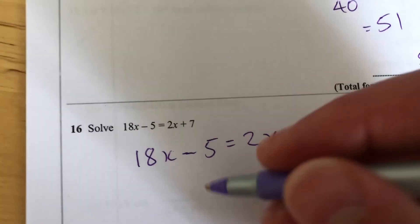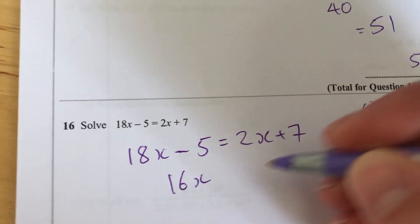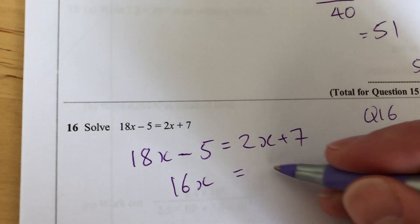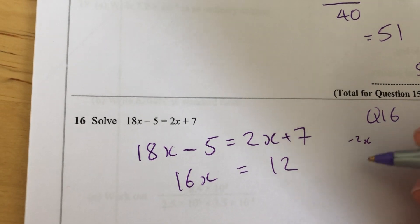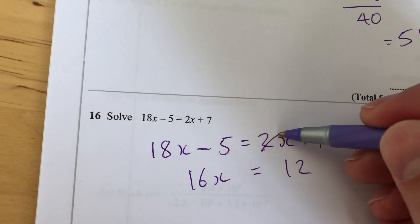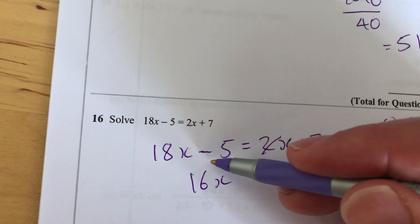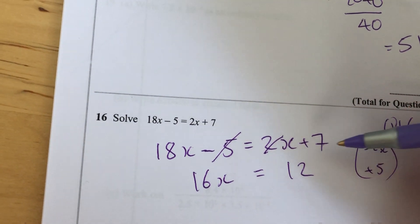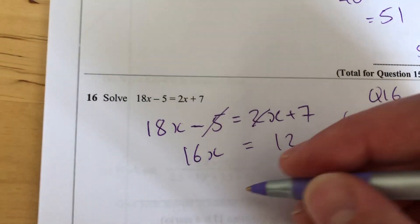Opposite of 2x is subtract 2x, take away 2x on both sides, and then add 5 on both sides. So I've subtracted 2x on both sides, and I've added 5 on both sides. Subtracting 2x cancels it there, makes that 16x. Add 5 cancels it there, and add 5 there. Now 16x equals 12.